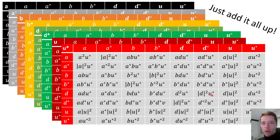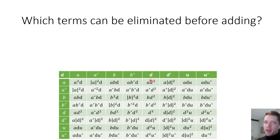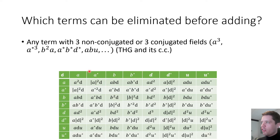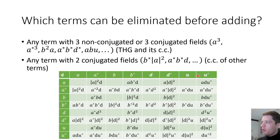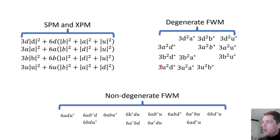Adding up all those terms gives the cube of the E field. To simplify, we can cancel some terms in advance: terms corresponding to third harmonic generation or its complex conjugates — such as A³ or B²A — can be ignored. Terms with two complex conjugations can also be neglected since they're the conjugates of terms with a single conjugation. What survives includes terms involving self and cross-phase modulation, degenerate four-wave mixing, and non-degenerate four-wave mixing.